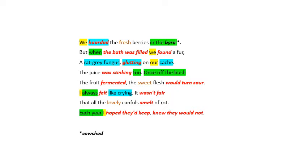Look at the imagery highlighted: hoarded, rat-grey fungus, glutting, cache, like crying. You have negatives there — the hoarding of the fruit, the fungus that grows in the disgusting rat-greyness of it, the glutting which is overindulgent, and the cache — a secret hidden-away thing as if there's something shameful or wrong about it. And then there's the grief of 'like crying'. Contrast that with the very few positive modifiers here: the fresh berries, the sweet flesh, and the lovely canfuls — which have gone, washed away by this long line of negative words.